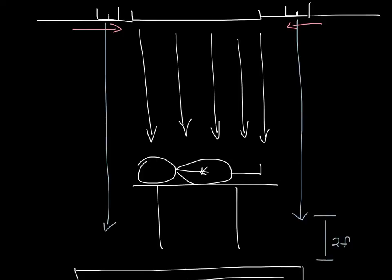You want to select the air curtain so that you're around 50 feet per minute about two foot above the floor.